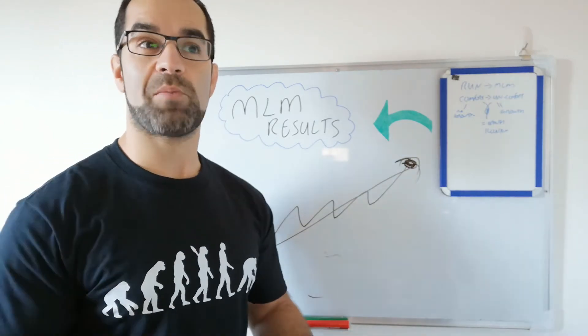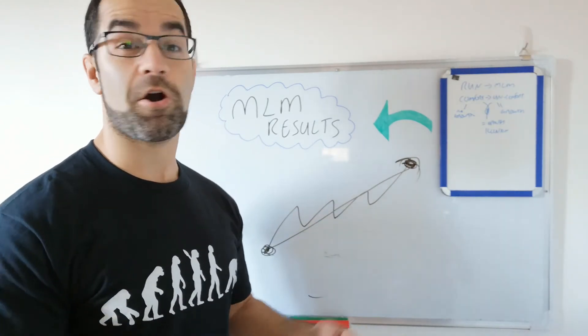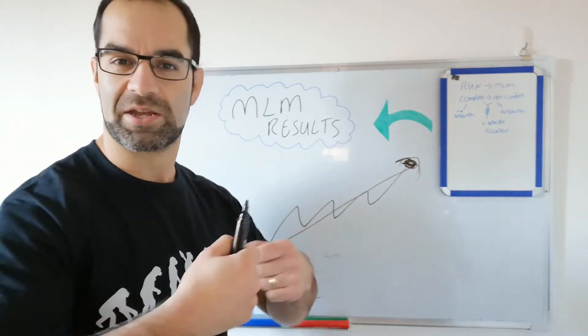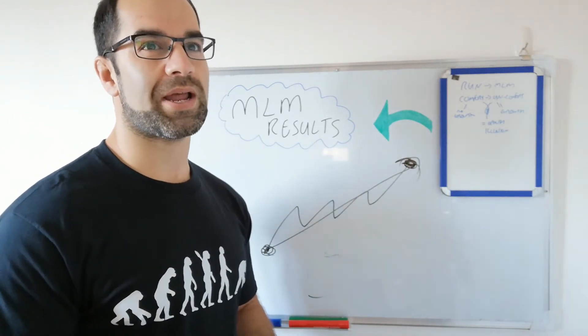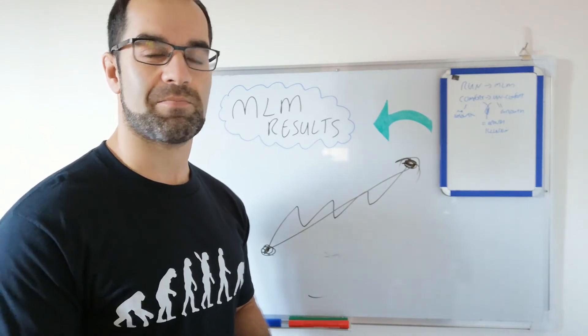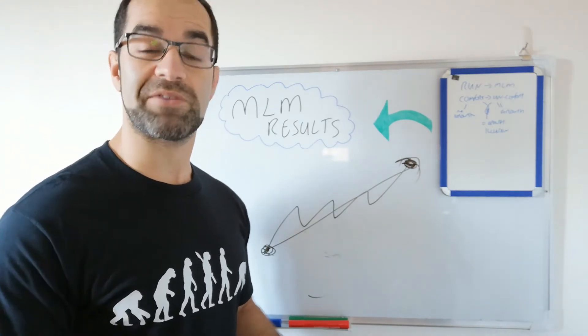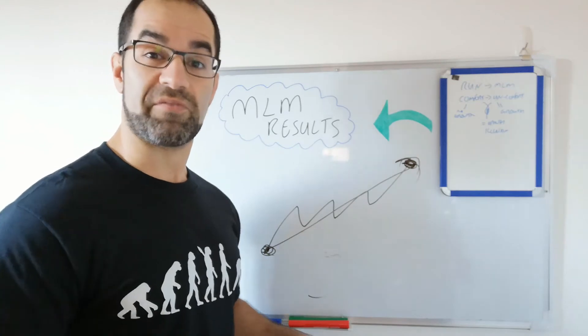I remember when I got my brown belt in jiu-jitsu the other week. And one of the guys said, oh man, you need to, I wear a black gi mainly, a black jiu-jitsu suit. He said, you're going to have to get a white gi now to show the belt off. I said, man, you know what? I said, it's not the belt the man wears. It's the man that wears the belt. I've had to become a different person to be worthy of this level.